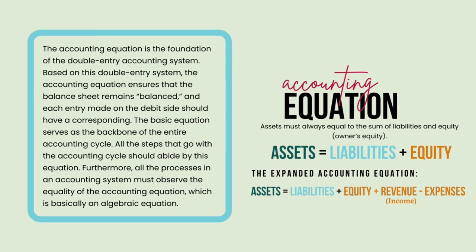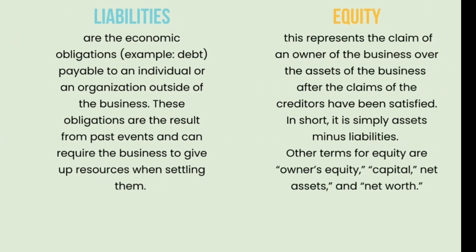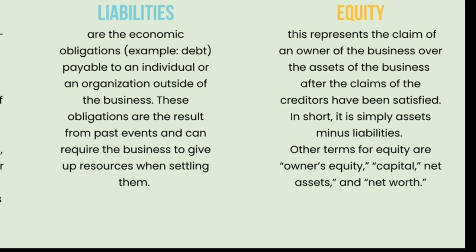Assets are a company's resources — things the company owns. This includes anything owned or possessed by the business which is capable of being expressed in terms of money or possessing monetary values, and which is available for the payment of the debts of the business. In short, assets represent the resources of the business. Liabilities are the economic obligations payable to an individual or organization outside of the business, resulting from past events. Equity represents the claim of an owner of the business over the assets after the claims of creditors have been satisfied — simplified as assets minus liabilities.